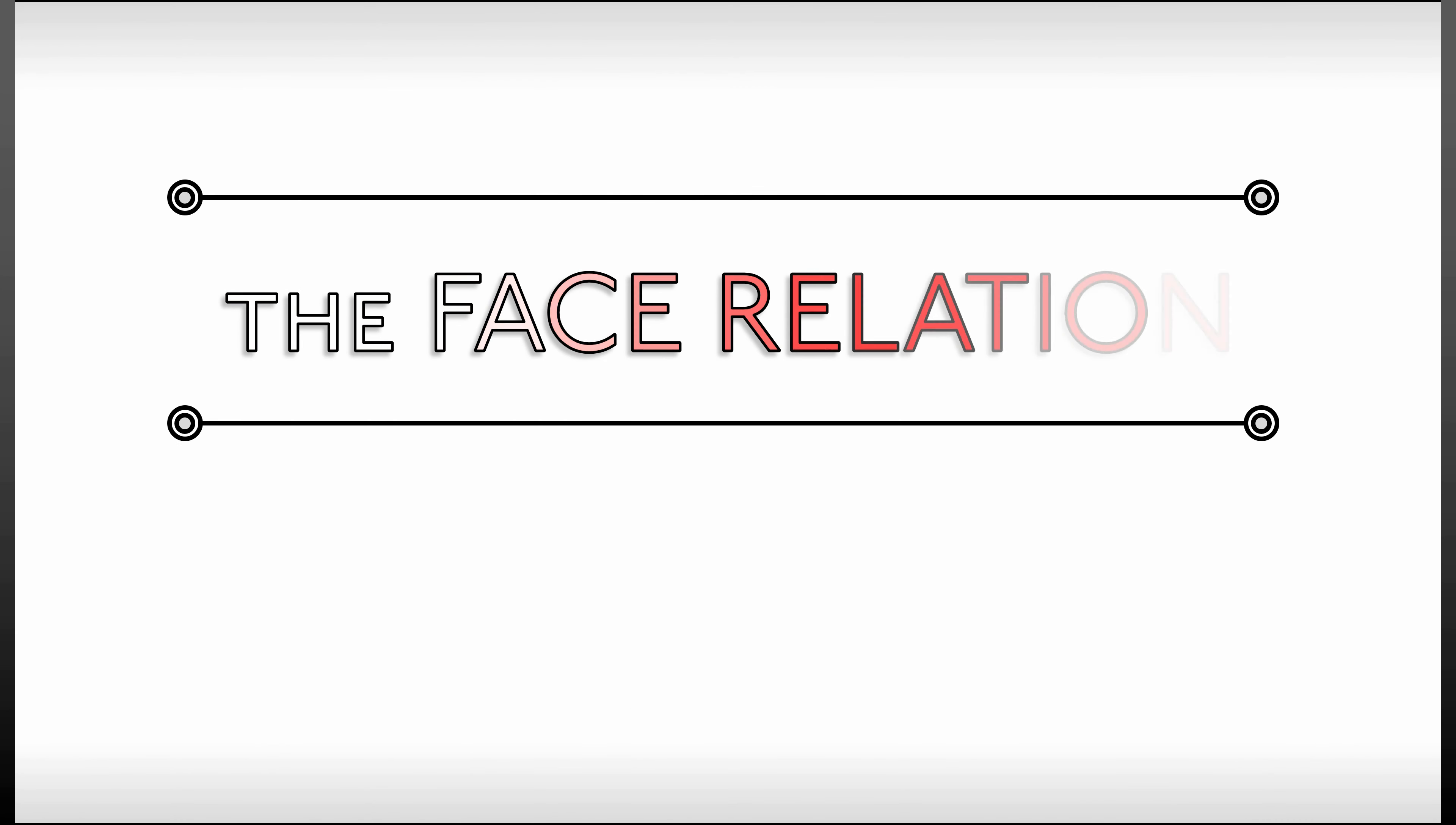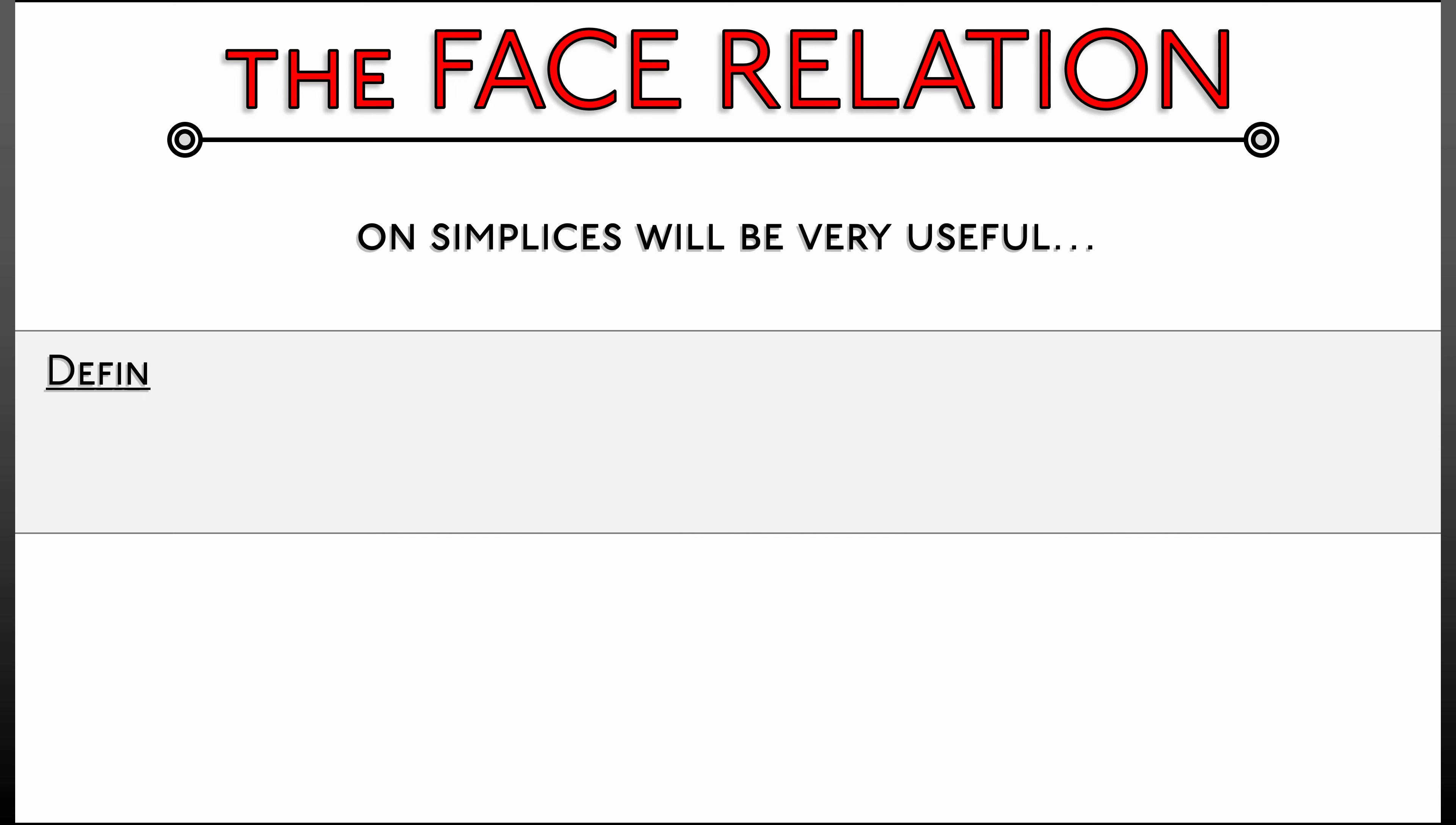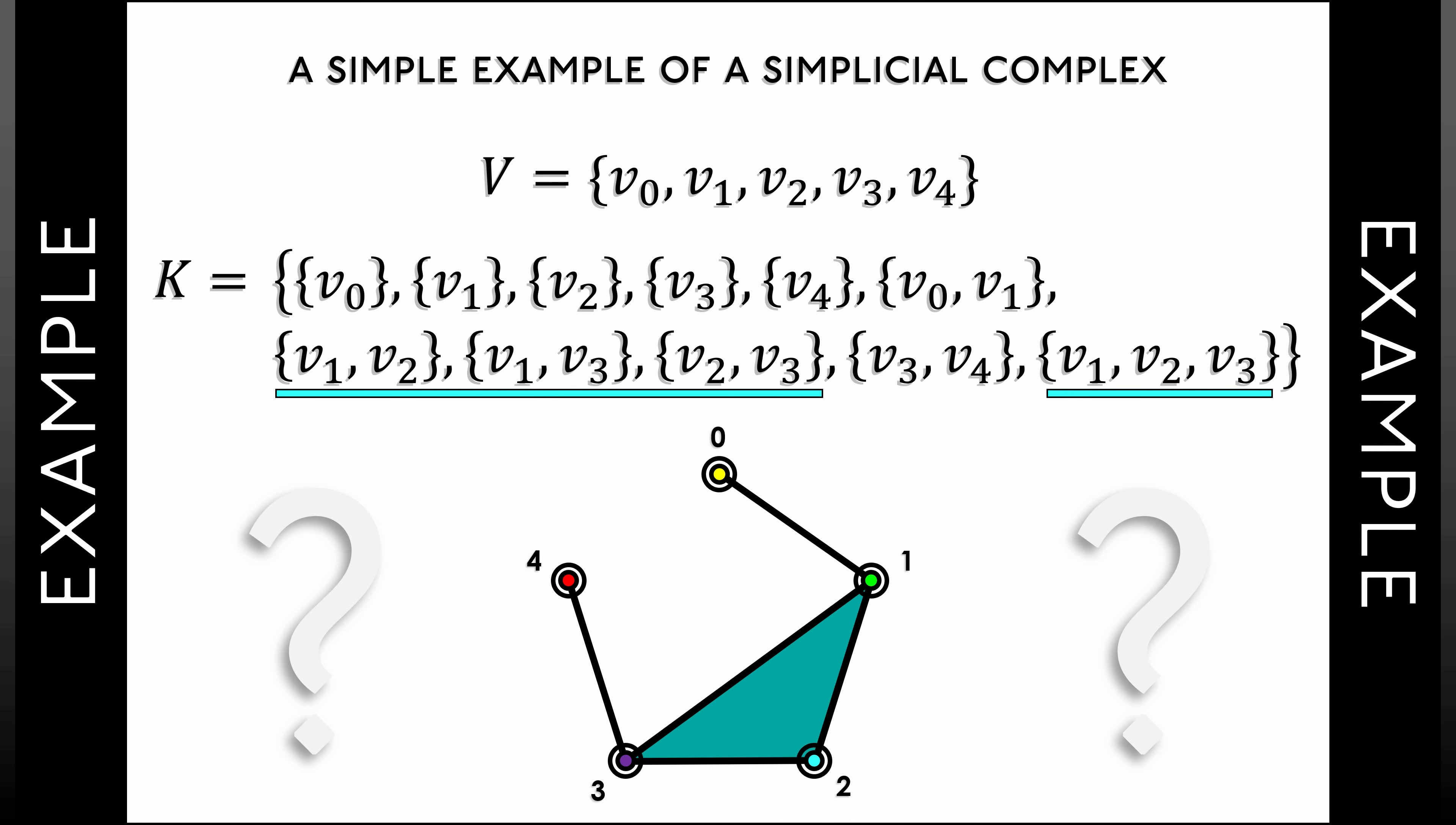Now, that last condition that we just checked leads us to a relation, a face relation, on simplices that's going to be very useful going forward. Here's the definition. We say that a simplex sigma is a face of another simplex tau, that is written with this inequality sign. Sigma is less than or equal to tau if every vertex of sigma is also a vertex of tau. So in the example that we just looked at, we showed that the two-simplex V1, V2, V3 contains its three one-simplex faces, as well as its three vertex faces.